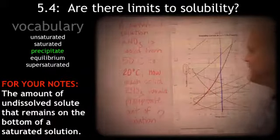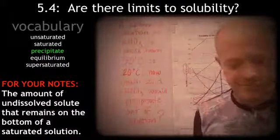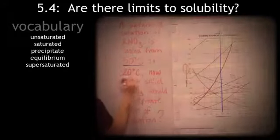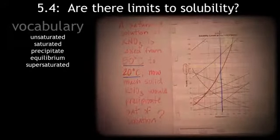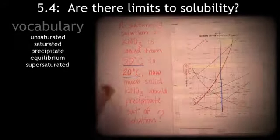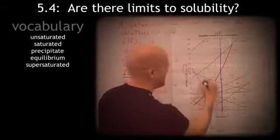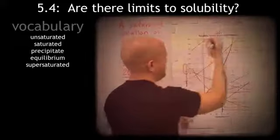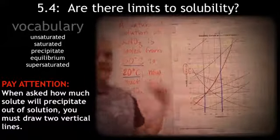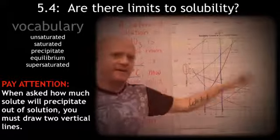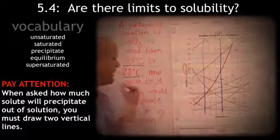So, how do we do this? We have a couple pieces of information. First of all, we have two different temperatures. So, when you see two different temperatures, we're just going to go ahead and draw the lines on both of those temperatures. And remember, we're only dealing with potassium nitrate. So, all these other lines, ignore them.